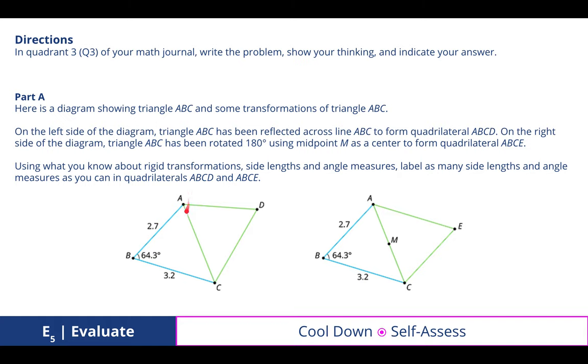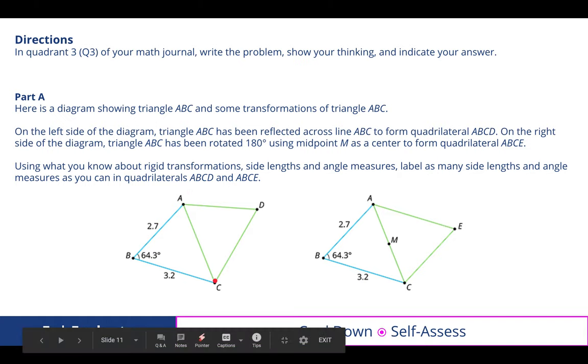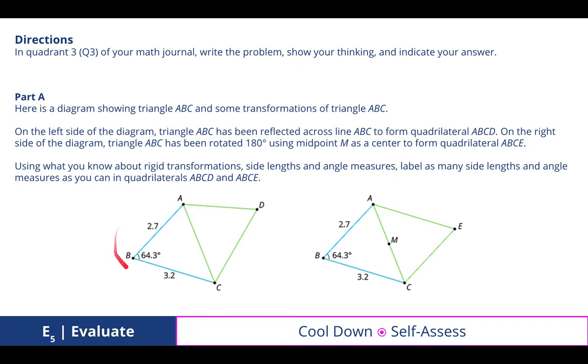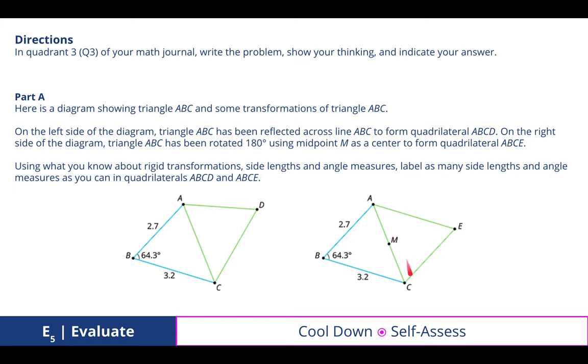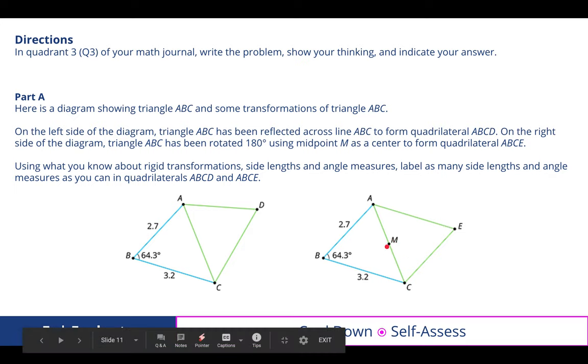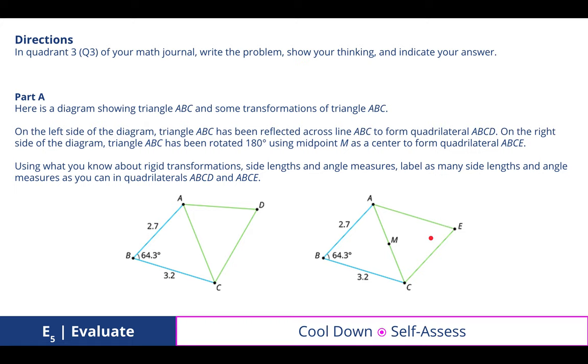One being a reflection about a mirror line, in this case, A, C. So we have the pre-image, which is blue, to the image, which is green, and then a rotation about the midpoint of A, C, which rotates 180 degrees from the blue or pre-image to the image triangle. And here are the results to that.